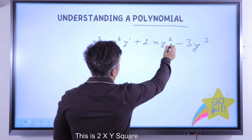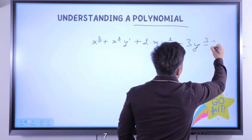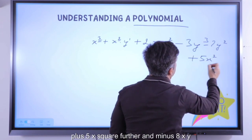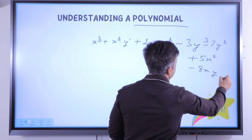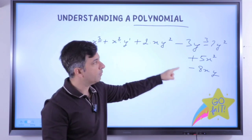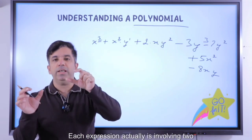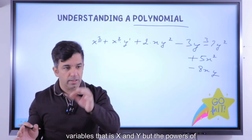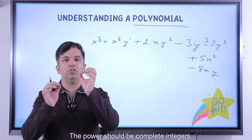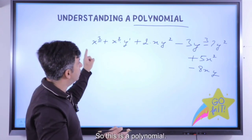This is x² multiplied by y, this is 2xy², minus y³. Extending this polynomial further: minus 7y², plus 5x², minus 8xy. In each expression we have two variables x and y, but we only look at the powers of these variables — the powers should be complete integers. They cannot be negative integers and they cannot be fractions. This is a polynomial.